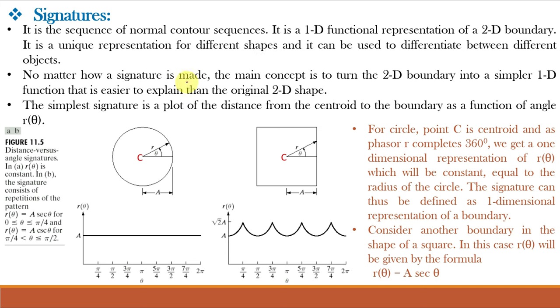And no matter how a signature is made, the main concept is to turn the 2D boundary into a simpler 1D function that is easier to explain than the original 2D shape. The simplest signature is a plot of distance from the centroid to the boundary as a function of angle R of Theta. Let us understand the signature for this circle and this square.